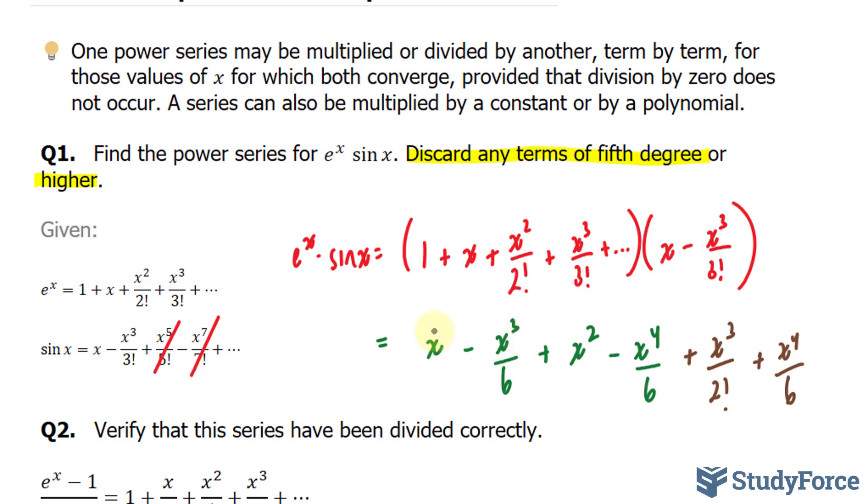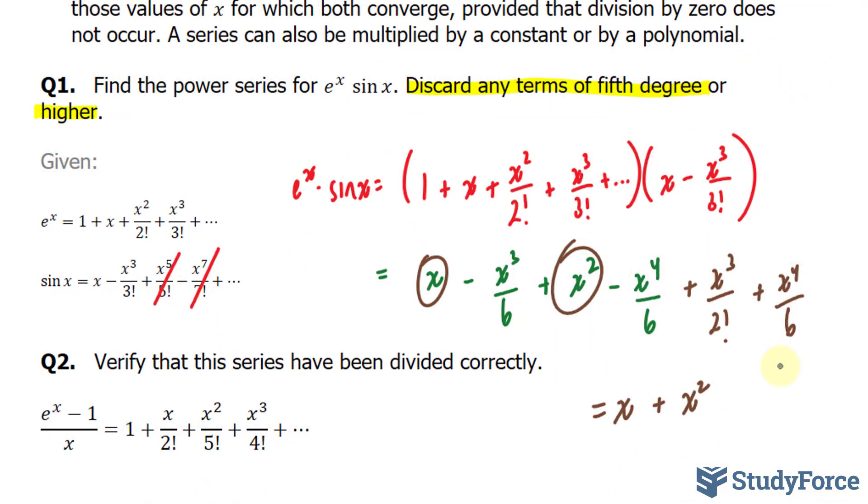Now we have to combine like terms. This term and this term are not alike, so that ends up becoming our first two terms, x plus x squared. This term and this term are alike. In fact, they're the same except for opposite signs, so I can just cancel them out.